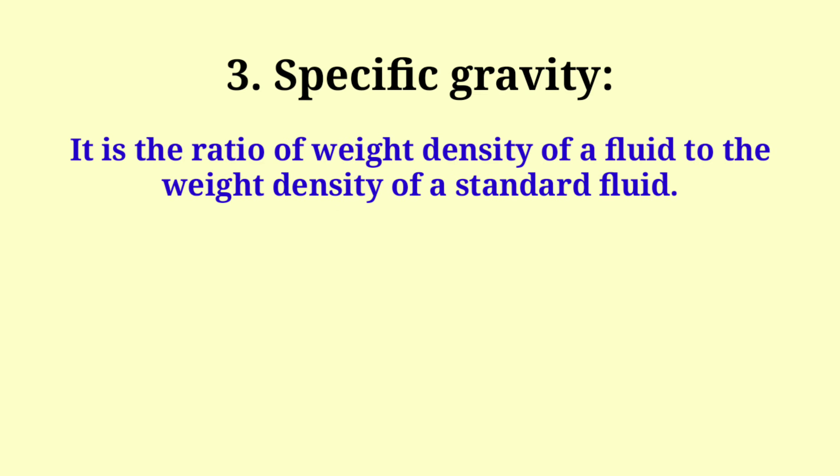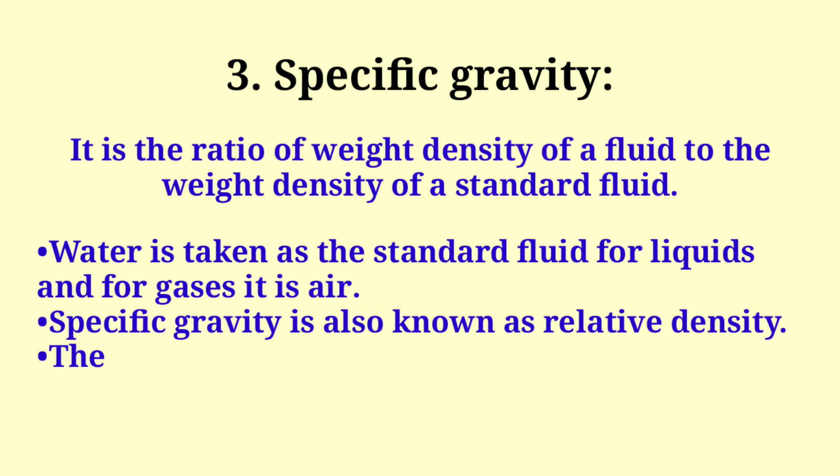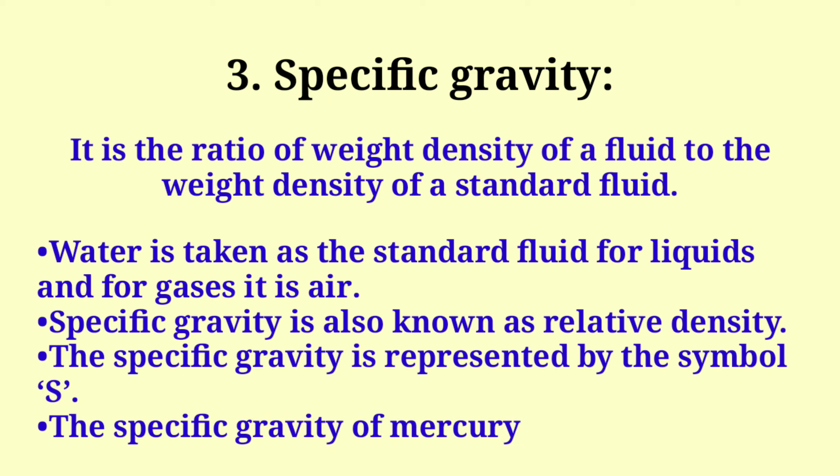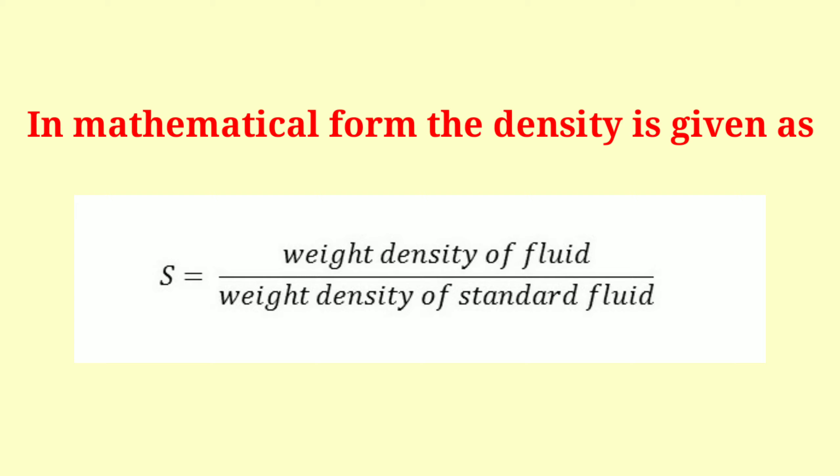Specific gravity is the ratio of weight density of a fluid to the weight density of a standard fluid. Water is taken as the standard fluid for liquids, and for gases it is air. Specific gravity is also known as relative density and is represented by the symbol S. The specific gravity of mercury is 13.6. Mathematically, S = weight density of fluid / weight density of standard fluid.